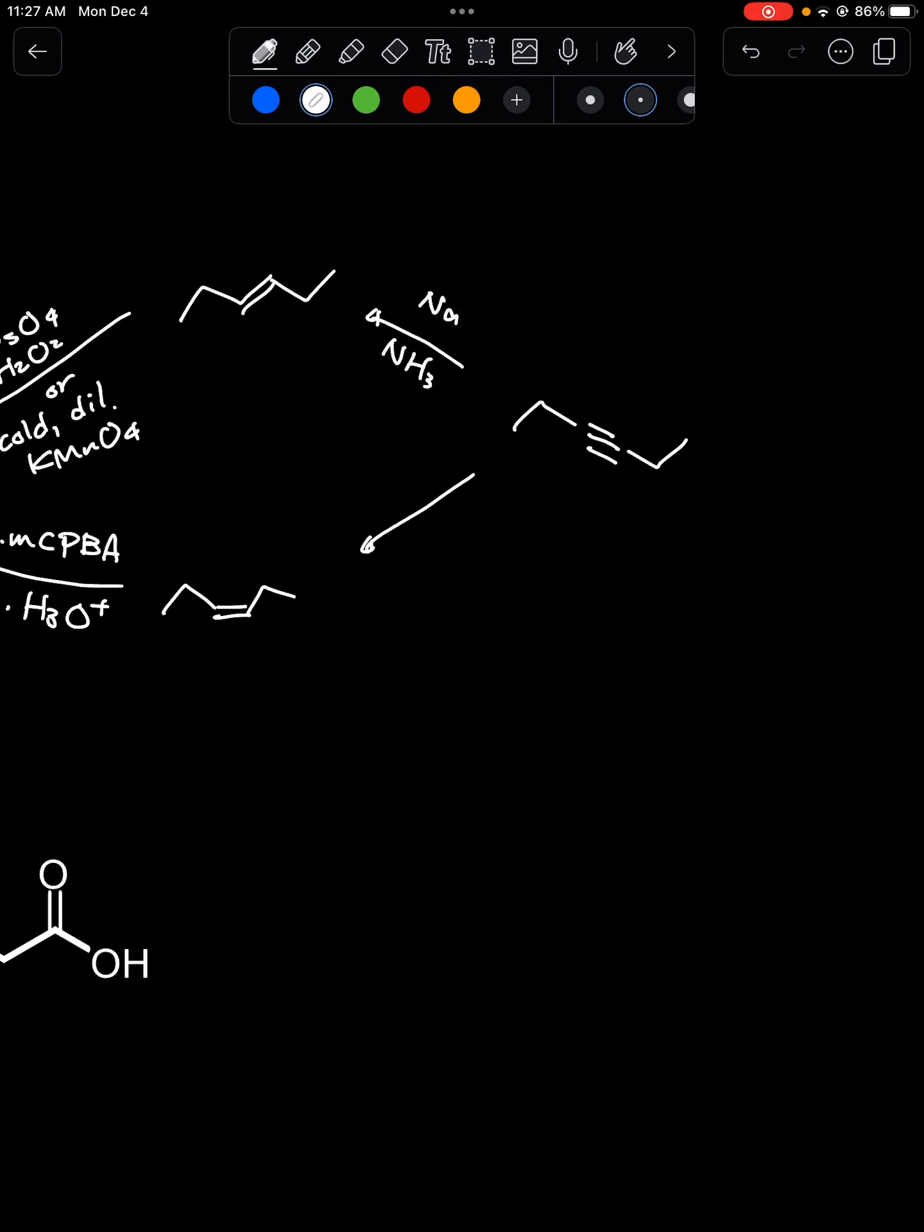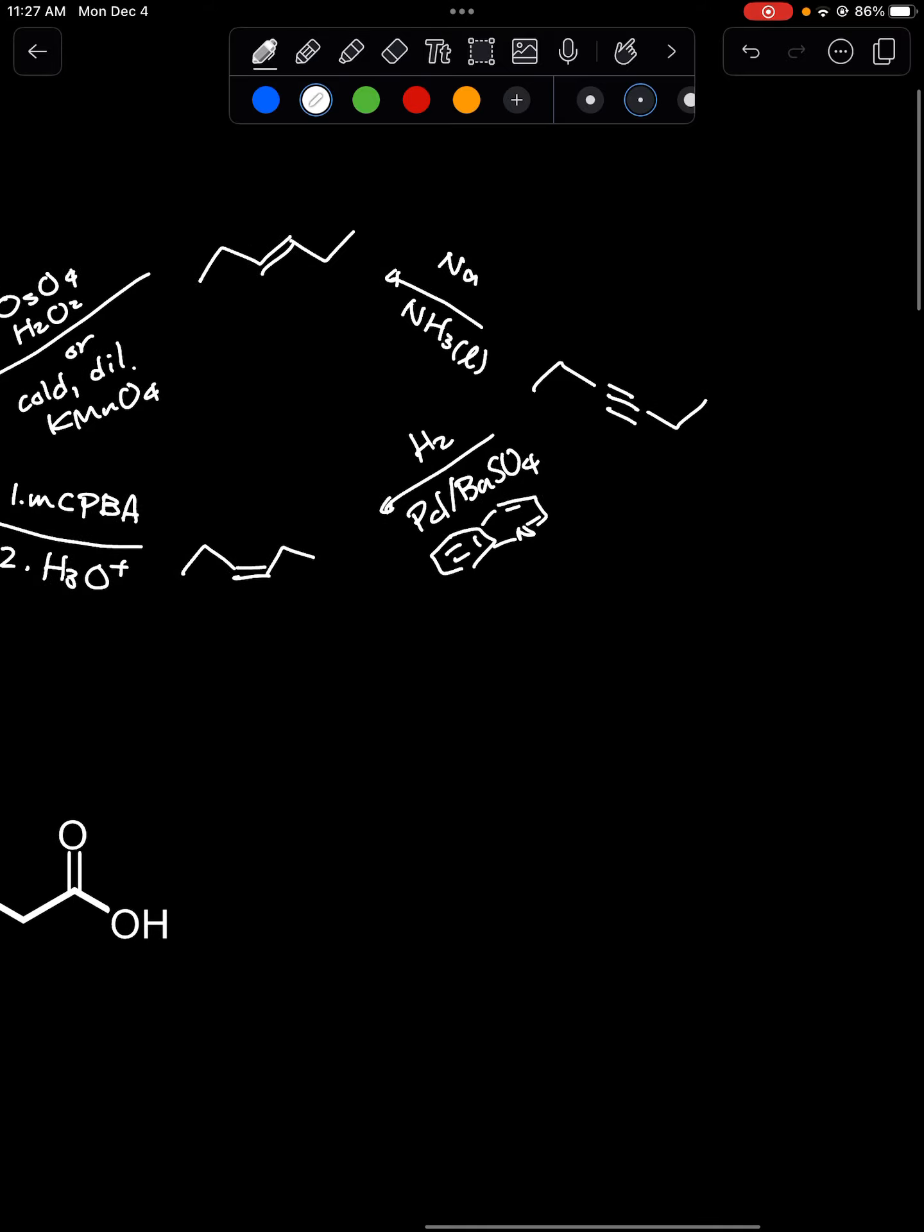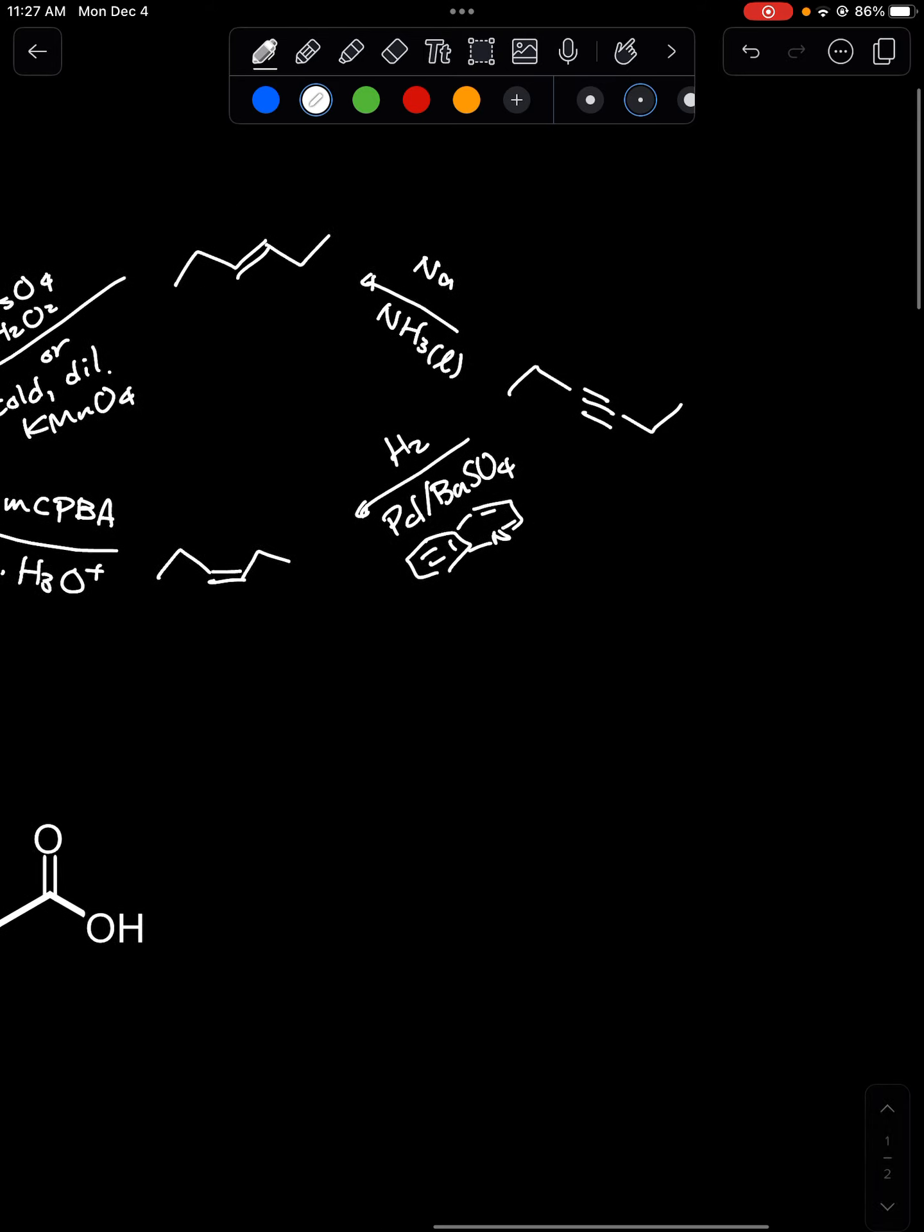To make trans you do that through the radical anion intermediate using alkali metal in ammonia. To do partial hydrogenation you need hydrogen gas of course but then you need a poisoned catalyst like Lindler's catalyst, palladium deposited on barium sulfate and quinoline.